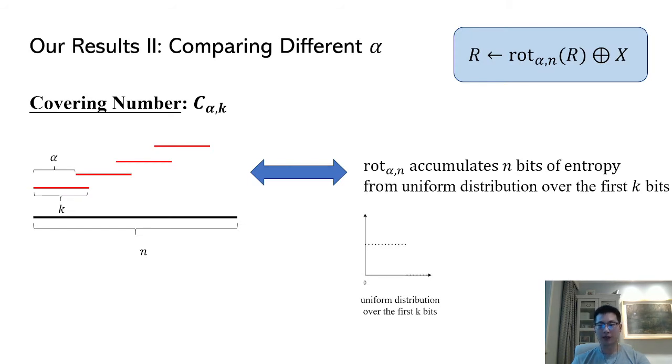To do this, we introduce a simple efficiently computable quantity which we call the Calvary number. Intuitively, Calvary number alpha k is the smallest number of samples needed for rotation by alpha to accumulate full entropy from the uniform distribution over the first k bits. Equivalently, it's like covering a black segment of length n using a shorter red segment of length k. Every time the red segment is cyclically rotated by a constant alpha. The goal is to count how many times are needed for the red segment to cover the entire black segment.